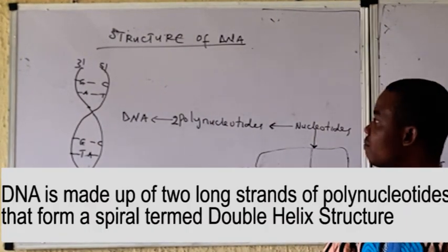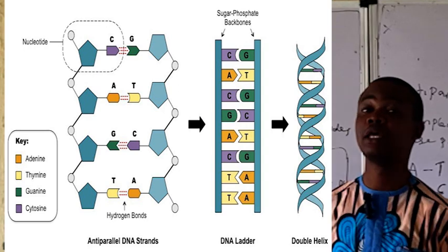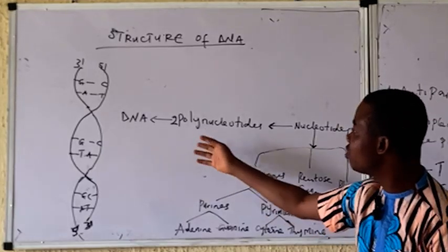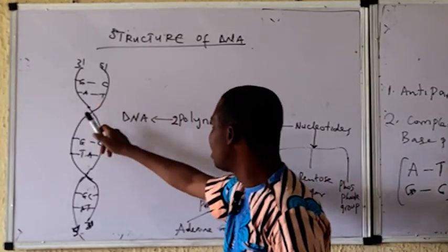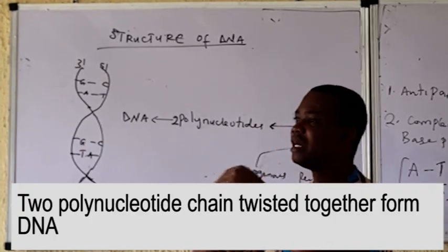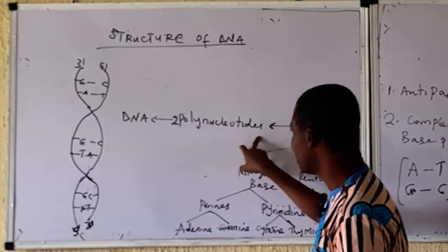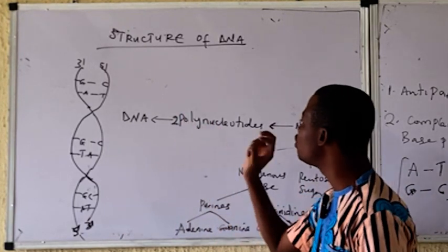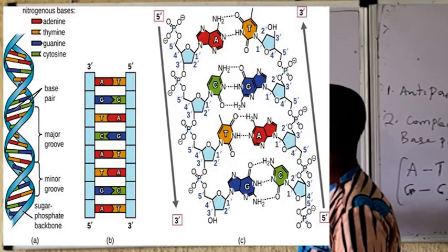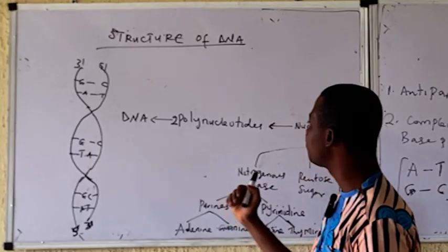The structure of DNA is basically made up of two strands. DNA is double-stranded, and the two strands are wrapped together to form a double helix structure, as you can see in the diagram being displayed. You will see that DNA is made up of two strands — this is the first strand and this is the second strand. When these two strands come together, they form what is known as DNA. Each of these strands is known as a polynucleotide.